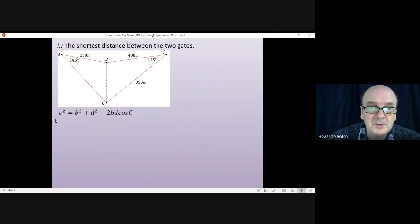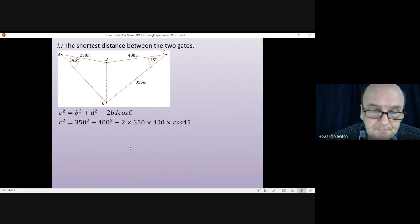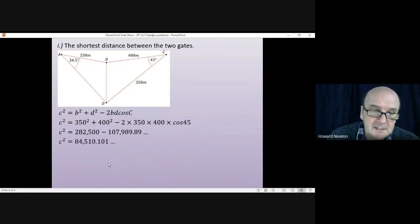So it is the cosine rule we'll be using. We'll want this form: c² = b² + d² - 2bd·cos(C). We know the length of b is 350, we know the length of d is 400, and we know angle C is 45. We just put all of that into the formula. That gives us, using the calculator, that tidies up to 282,500 minus this number.